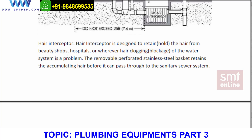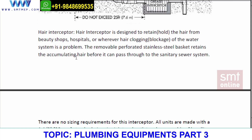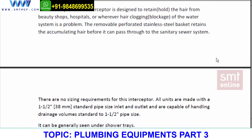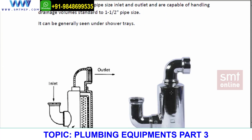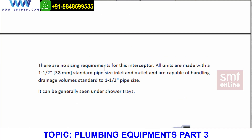A hair interceptor is designed to retain or hold hair from beauty shops — where showers may also be taken — hospitals, or wherever hair clogging is a problem. The removable perforated stainless steel basket retains accumulated hair before it can pass through the sanitary sewer system. It is made mainly of stainless steel and works by separating the hairs using a strainer.